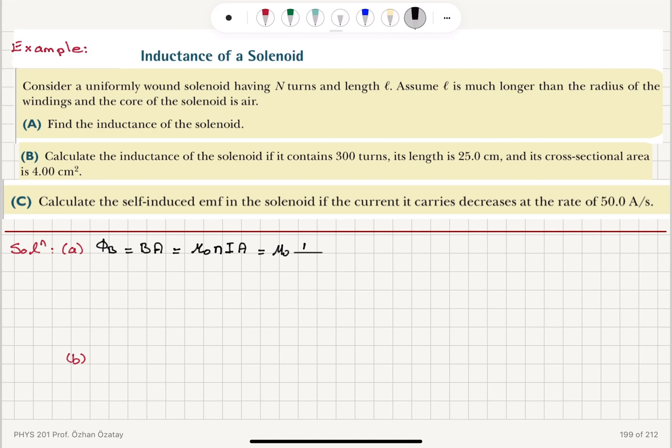then number of turns, capital N divided by L, the length of the solenoid, current times the area. And we know that inductance is equal to capital N phi B divided by I.